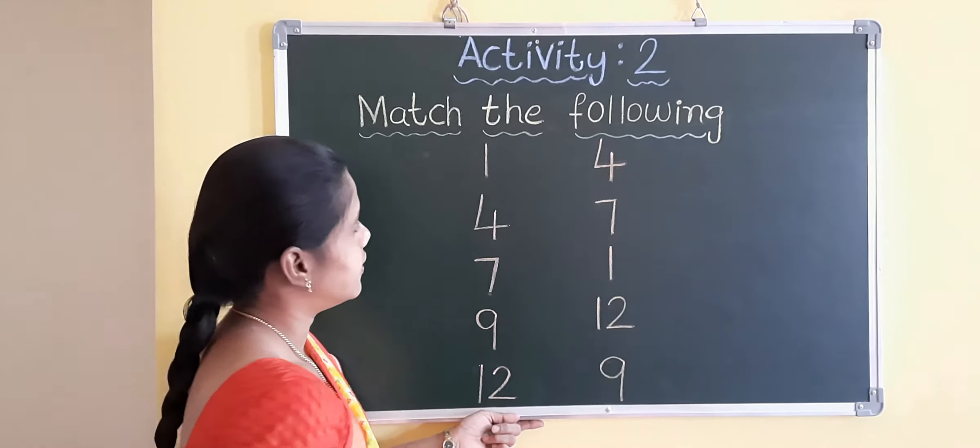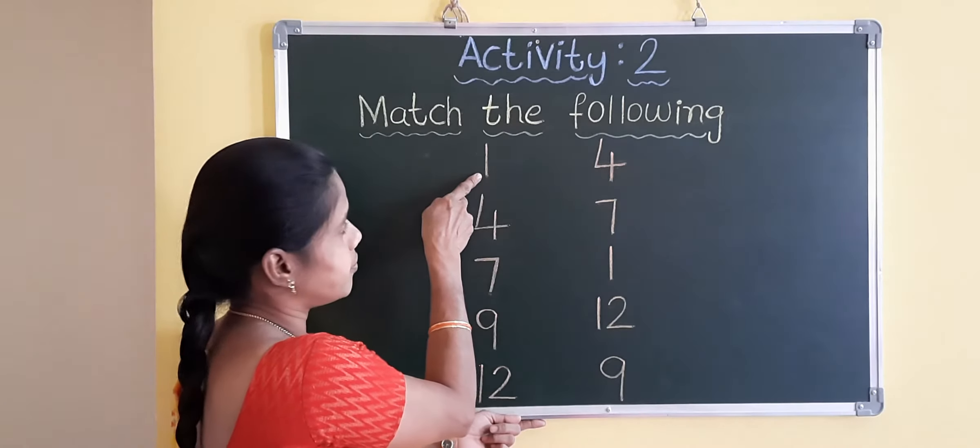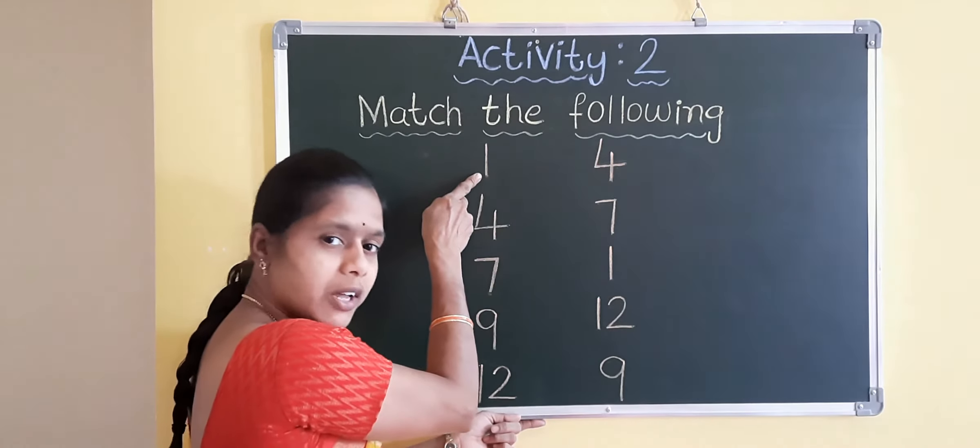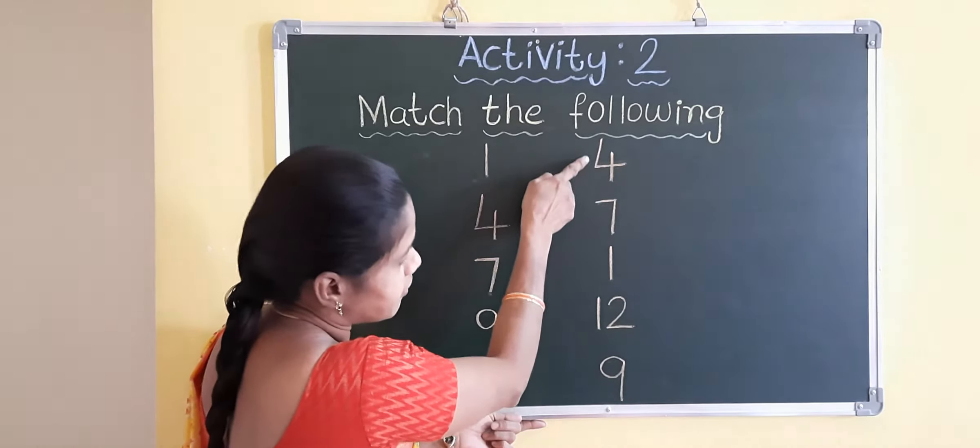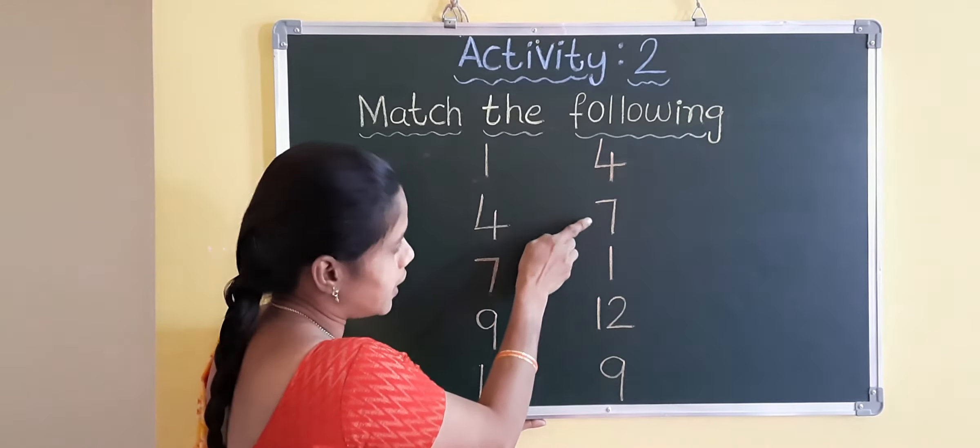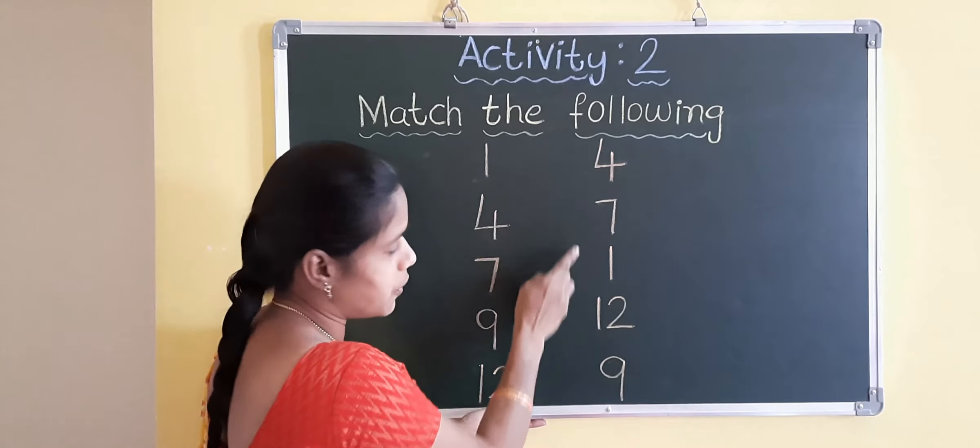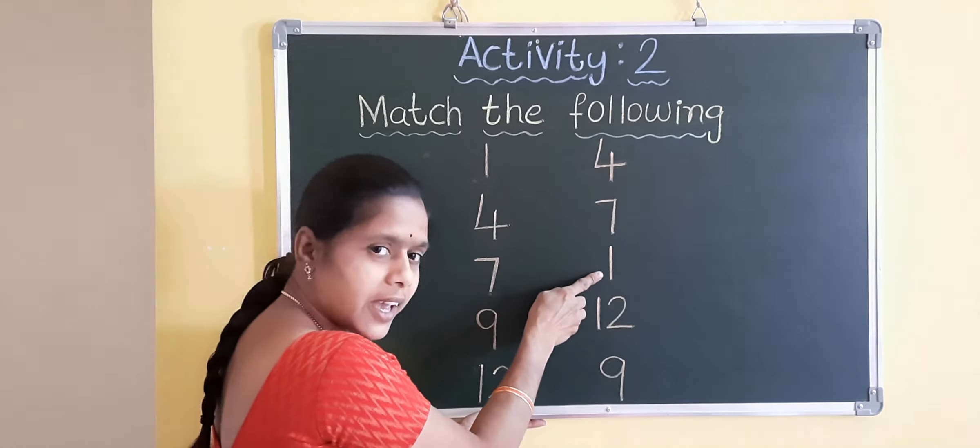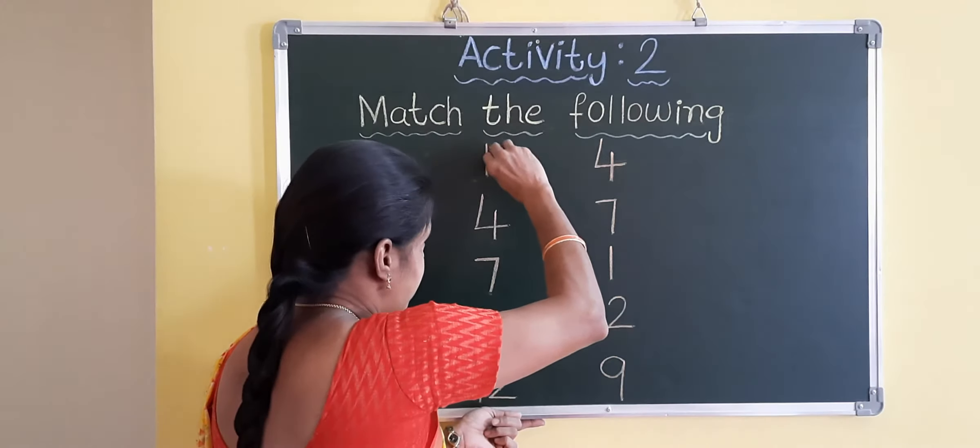Yes. Say children, which number is this? Yes, this is number one. Right side, where is the number one? Is it one? No. Is it one? No. Is it one? Yes. So, match it. Draw the line.